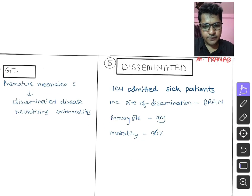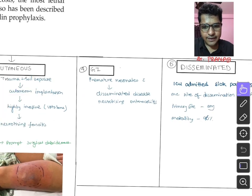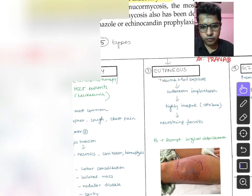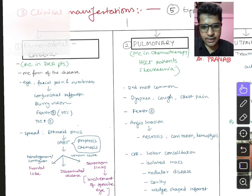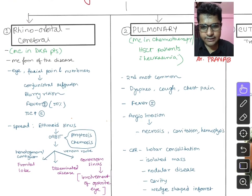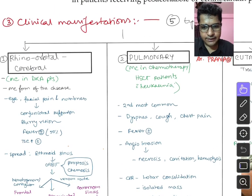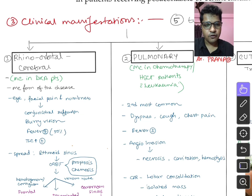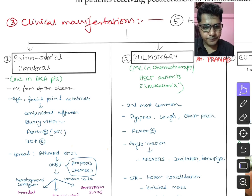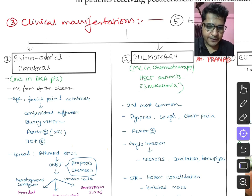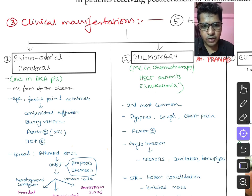Disseminated mucormycosis from any primary site — pulmonary or rhinocerebral — may disseminate to the brain, with a mortality of almost 96% despite treatment. The main two types to remember are rhino-orbital-cerebral and pulmonary — these represent 70–80% and 20–30% respectively of COVID-related mucormycosis cases.